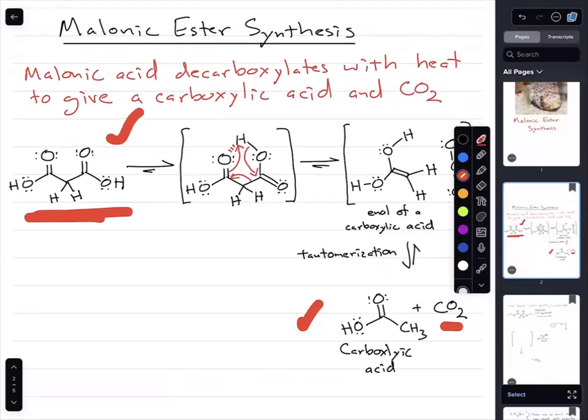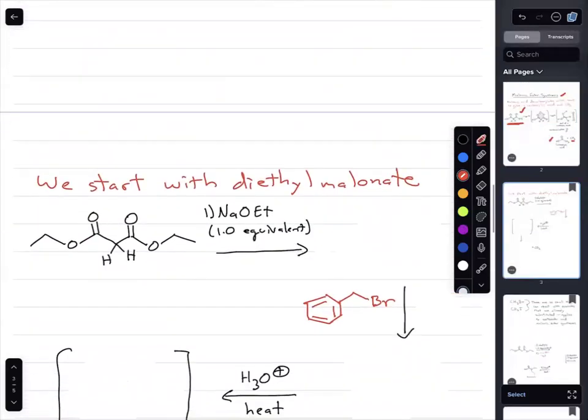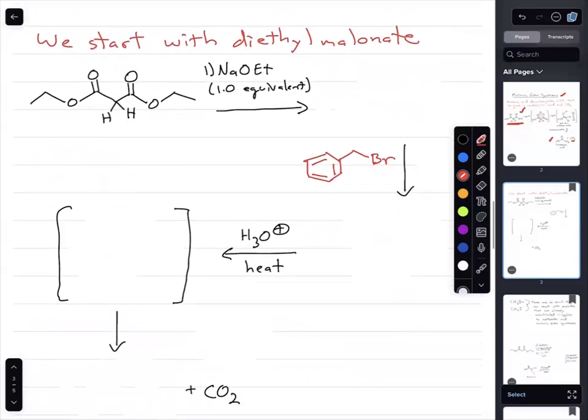So let's talk about how we can use that in the context of the malonic ester synthesis. We're going to start with diethyl malinate. Again, if you look at it, that diacid is called malonic acid, and so diethyl malinate is the diethyl ester.